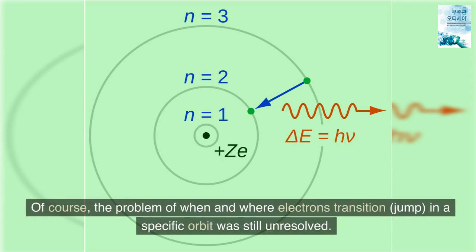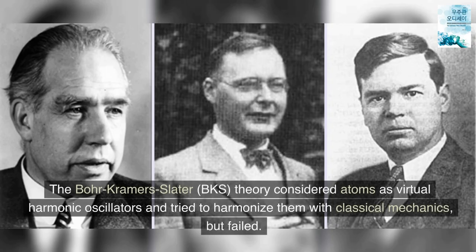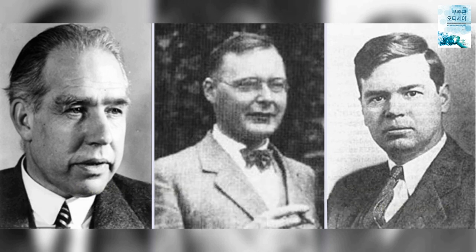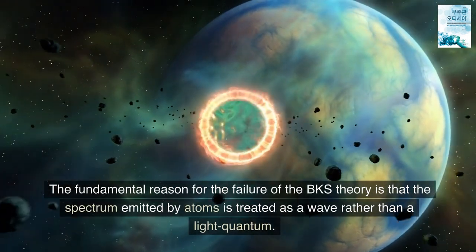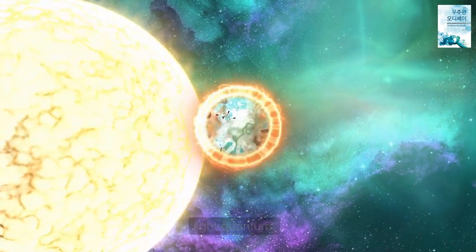Of course, the problem of when and where electrons transition, jump, in a specific orbit was still unresolved. The Bohr-Kramer's Slater, BKS, theory considered atoms as virtual harmonic oscillators and tried to harmonize them with classical mechanics, but failed. The fundamental reason for the failure of the BKS theory is that the spectrum emitted by atoms is treated as a wave rather than a light quantum.